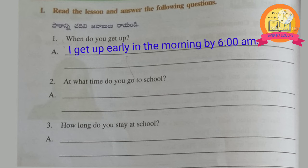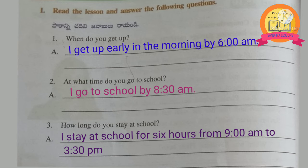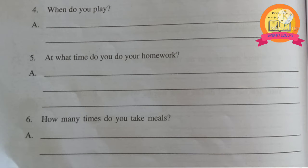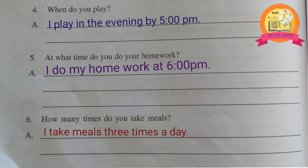1st Roman: read the lesson and answer the following questions about daily routine. 1st question: When do you get up? I get up early in the morning by 6 a.m. 2nd question: At what time do you go to school? I go to school by 8:30 a.m. 3rd question: How long do you stay at school? I stay at school for 6 hours, from 9 a.m. to 3:30 p.m. 4th question: When do you play? In the evening by 5 p.m. 5th question: At what time do you do your homework? I do my homework at 6 p.m. 6th question: How many times do you take meals? I take meals 3 times a day.